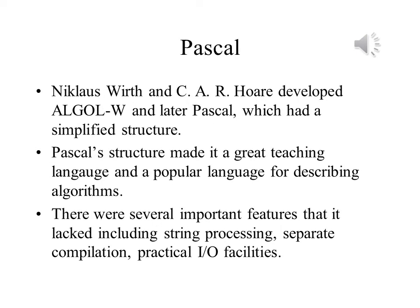Wirth and Hoare developed the ALGOL W compiler and later developed Pascal. Pascal's structure and smaller size made it a great language for teaching introductory programming, and it was also used to illustrate algorithms. At the same time, it lacked many features that programmers would normally want: there was no string type, although you could set up arrays of characters, separate compilation was not possible, and its input-output facility was not very powerful. Over the years, extensions of Pascal were created that addressed these concerns. UCSD Pascal was developed at the University of California, San Diego.